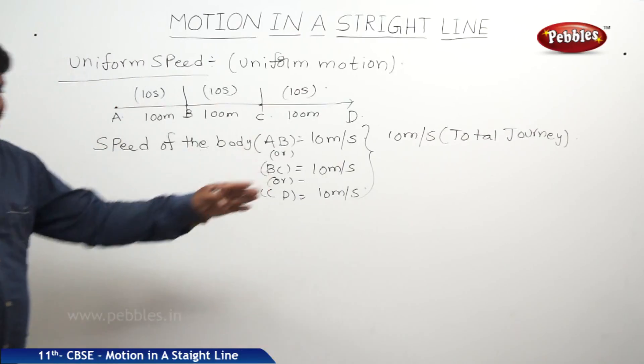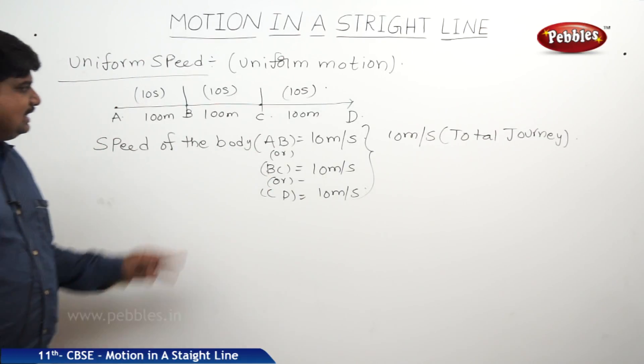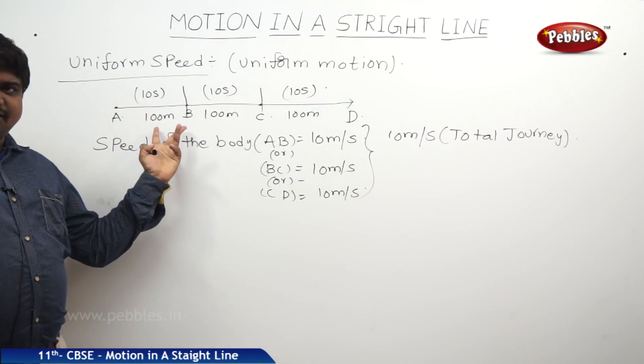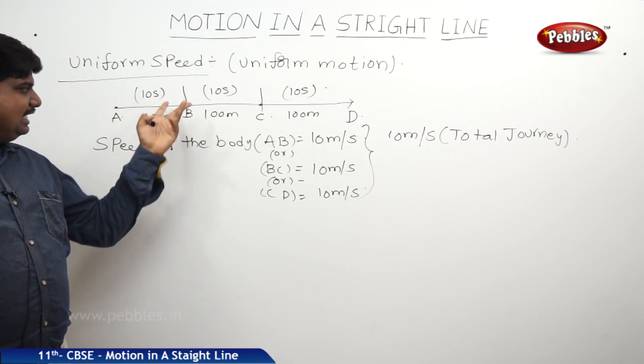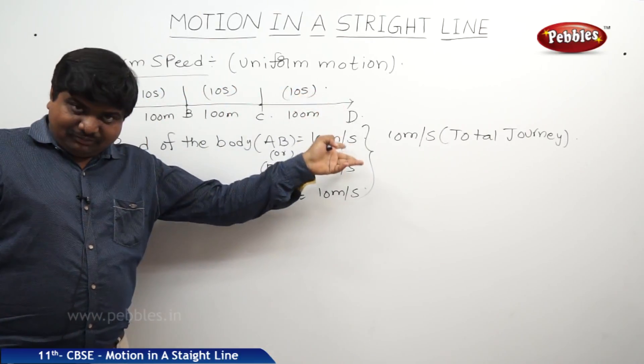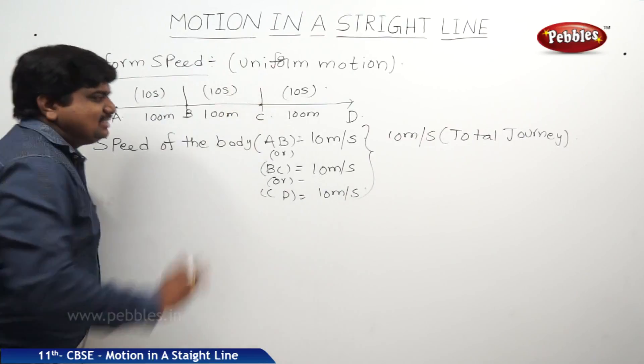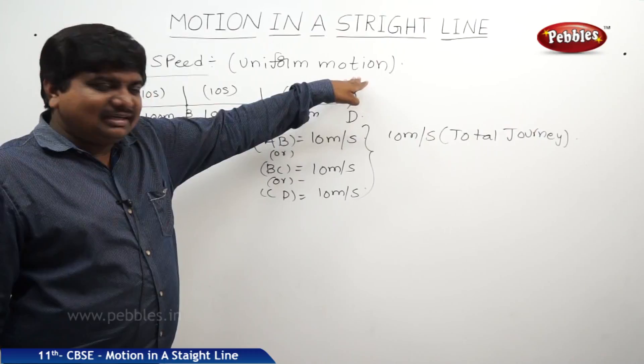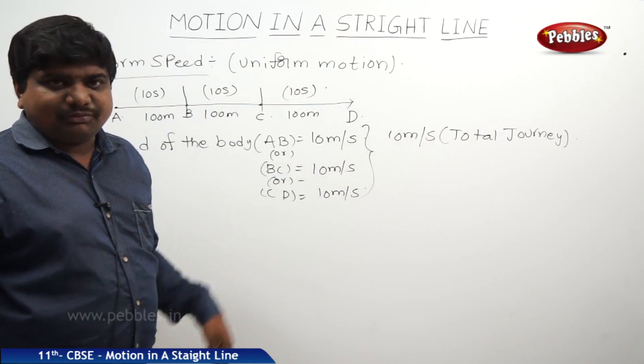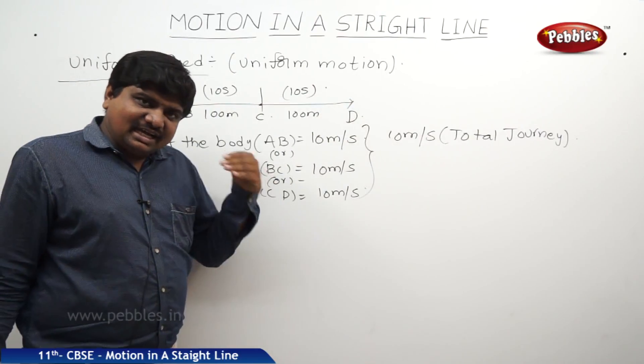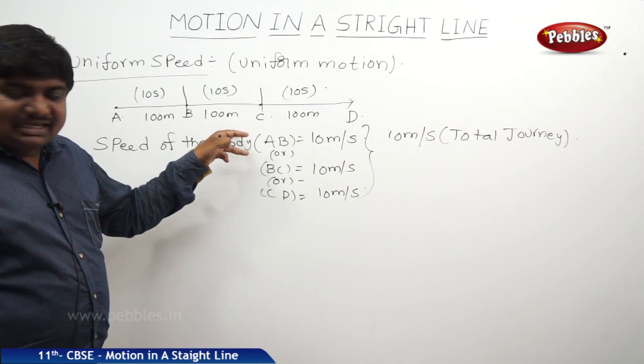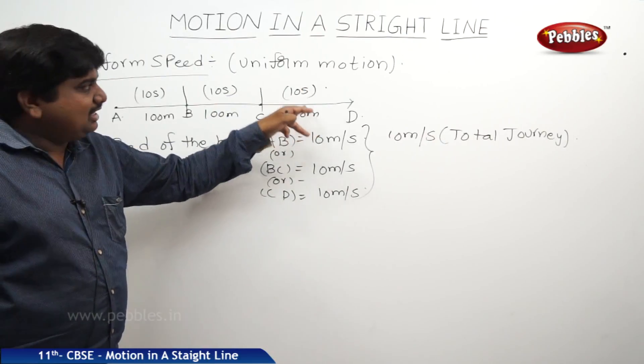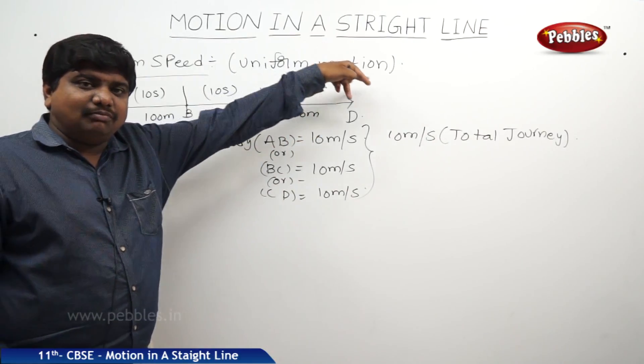So with this explanation, what we can understand is between any intervals or any positions, if the body is covering the same distance with same time, so this body is said to be executing the uniform motion. The physical or the correct definition for this uniform motion is, if a body is covering equal distances in equal intervals of time, then it is said to be executing uniform motion.